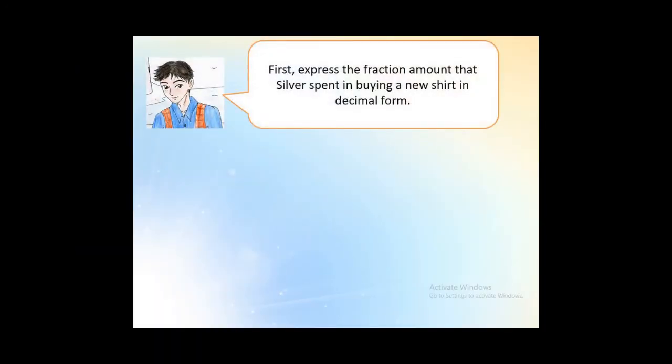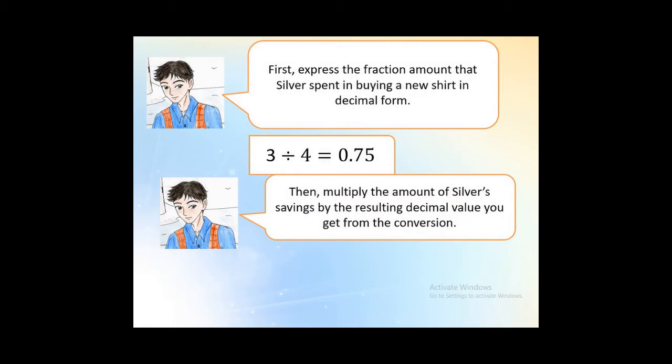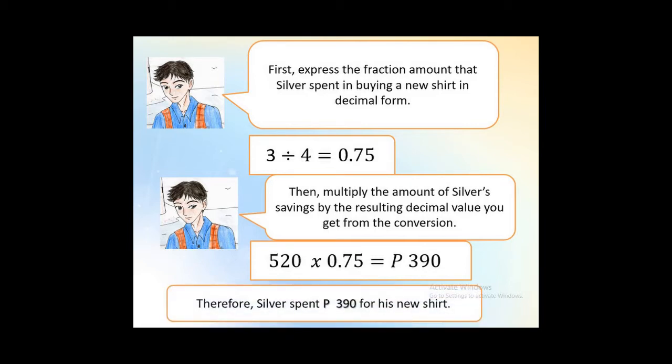First, express the fraction amount that Silver spent in buying a new shirt in decimal form. So 3 divided by 4, so that is 0.75. Then, multiply the amount of Silver's savings by the resulting decimal value you get from the conversion. So 520 multiplied by 0.75, so that would be 390 pesos. Therefore, Silver spent 390 pesos for his new shirt.